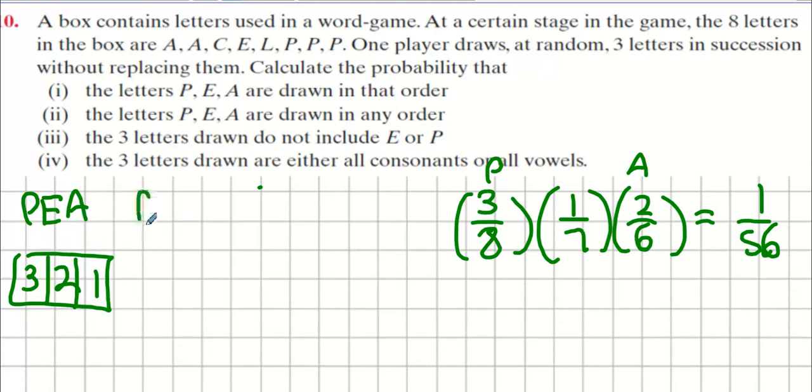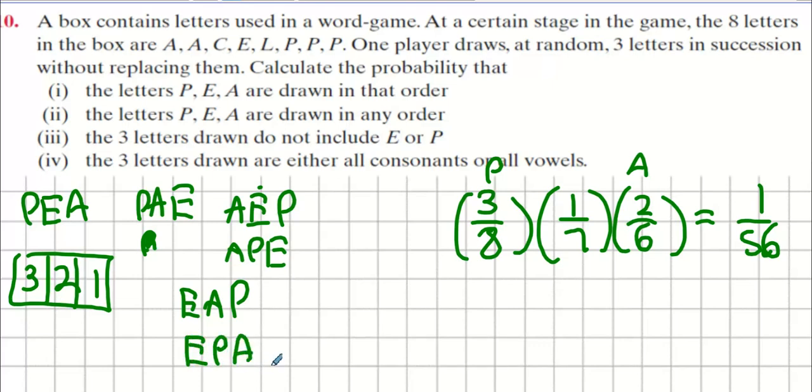I could use P, E, A. I could use P, A, E. I could use A, E, P. A, P, E. We could use E, A, P or E, P, A. That's six different ways of doing it, isn't it?